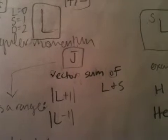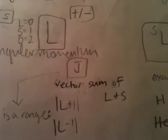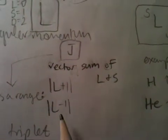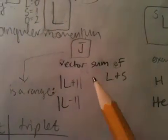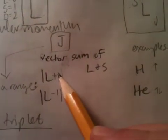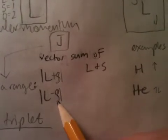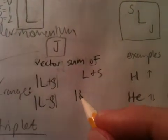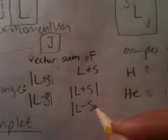Then, your J is your vector sum of L and S. So, this is a range from L plus S and L minus S. So, again, vector sum of L plus S and L minus S.